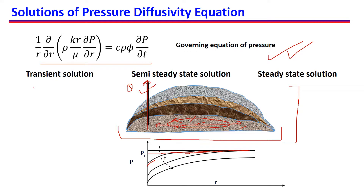In the initial stages, when we can say that we are in the transient state, the pressure measured at the well is denoted by PWF, and away from the well, when we have only a single well in the reservoir, pressure is PI. As time progresses, pressure near the well decreases more, but as we move away from the well, pressure is still PI until we reach a boundary in the reservoir, as shown by this boundary. Once we reach the boundary, the pressure away from the well will no longer remain PI.